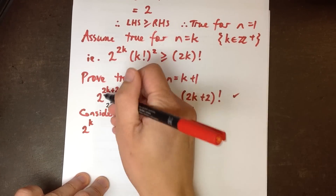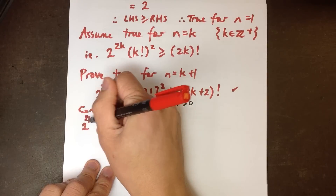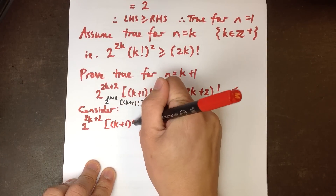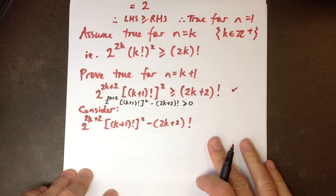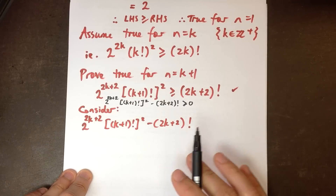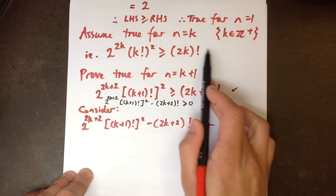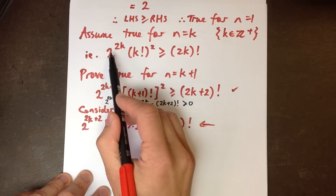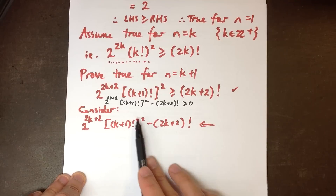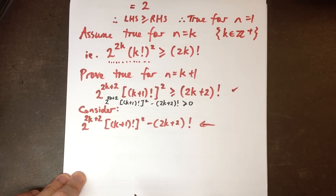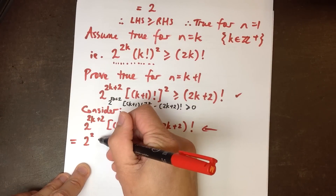Let's look at the left-hand side: 2 to the 2k plus 2, multiplied by k plus 1 factorial all squared, minus 2k plus 2 factorial. I want to expand this so I can use my assumption. This 2 to the 2k plus 2 is really 2 squared times 2 to the 2k, by index laws. And k plus 1 factorial is really k plus 1 times k factorial.